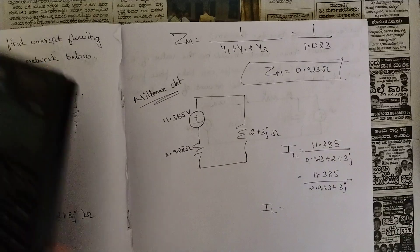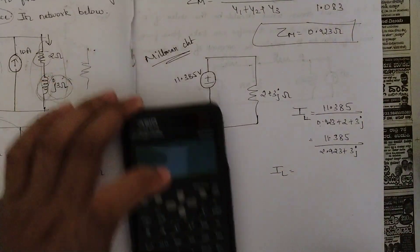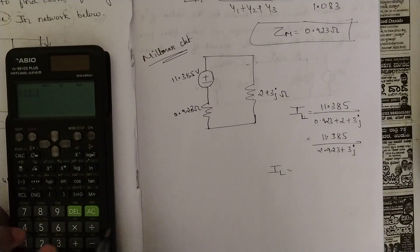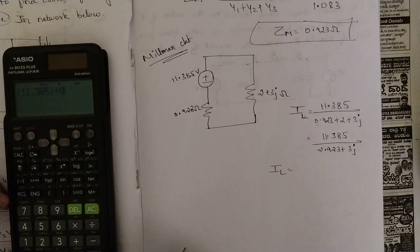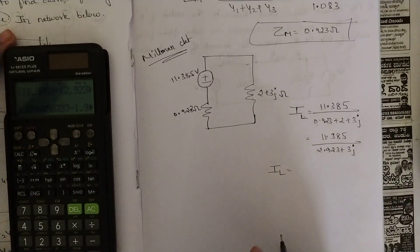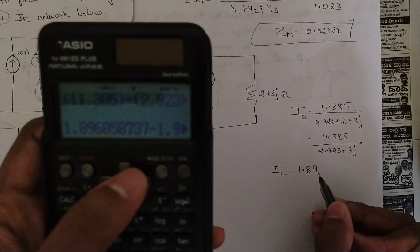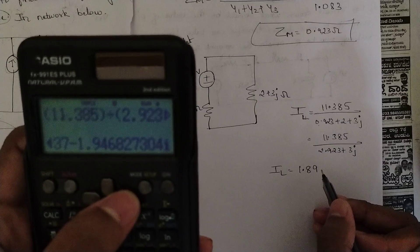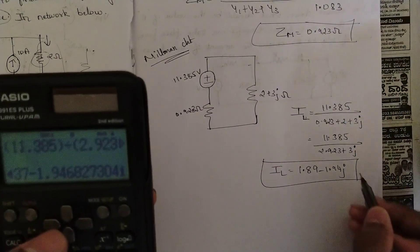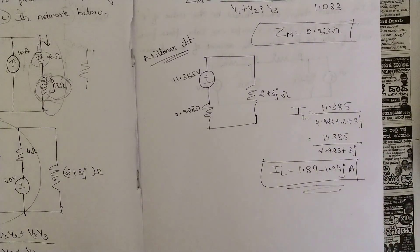To solve this with a complex value, use a calculator in complex mode. Enter: 11.385 / (2.923 + 3j). Solving gives IL ≈ 1.89 − 1.94j amperes. This is the current in complex form. That's how you solve this problem.